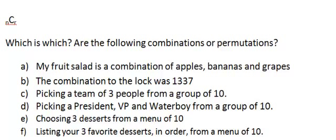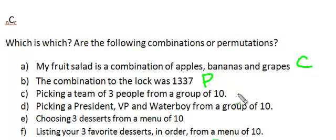So which is which? Are the following combinations or permutations? The question to ask is: does order matter? First: my fruit salad is a combination of apples, bananas, and grapes. Fruit salad is all mixed up — it doesn't matter whether you have the apples first or the grapes first. Therefore this is a combination. Second: the combination to the lock was 1337 — order very much matters on a lock, so this is a permutation. Third: picking a team of three people from a group of ten — you're picking them as a clump, order doesn't matter, so this is a combination.